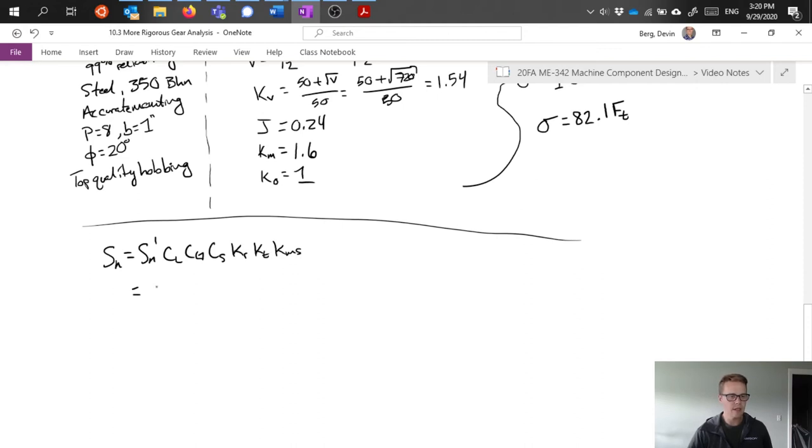We have the equation that looks something like this. So we need to start plugging things in. Sn prime, we were given that this is steel with a 350 hardness. If we look back at our fatigue chapter, we'd see there's an equation for Sn prime based on that, which is 250 times that hardness, which comes out to be in psi. We can make use of that. Load factor, we'll pick a load factor of one.